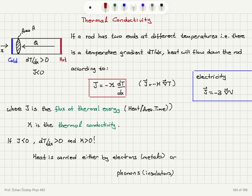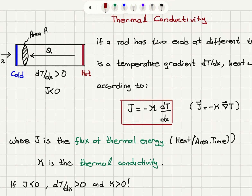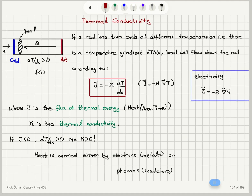We will now talk about how phonons contribute to conduction of thermal energy. If you have a rod with two ends at different temperatures — one side cold, one side hot — there will be heat flow from the hot side to the cold side until thermal equilibrium is reached. In this case we have a temperature gradient on the x-axis that is positive, and the flux of heat is in the negative direction, with a cross-sectional area A.